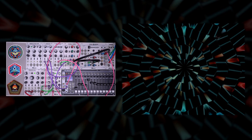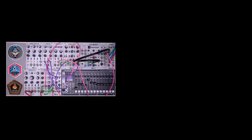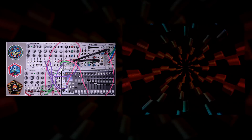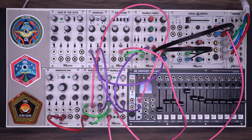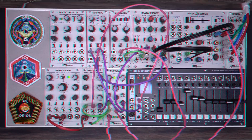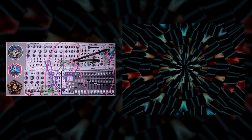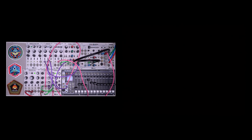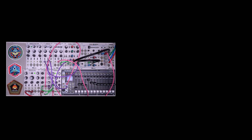In this video, we're going to look at using external still images of gradients to expand the functionality of your LZX system. This technique gives a lot of flexibility to a small system, and it can also be used to drive really complex results in a larger system. This somewhat complicated patch shows some of the complexity that's possible. All of the animation you see in this patch is driven by the incoming gradient ramp, which is a still image not being animated in any way by the memory palace.